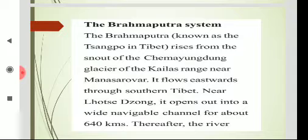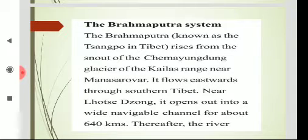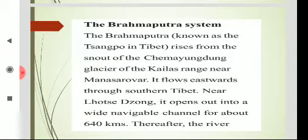The Brahmaputra, known as Tsangpo in Tibet, rises from the snout of Shemayangdang glacier of the Kailash range near Mansarovar. Many of the Himalayan rivers originate in glaciers — large accumulations of snow. Brahmaputra also originates from the Shemayangdang glacier. When it flows through Tibet, it is called Tsangpo. It then flows eastwards through southern Tibet, and near Lost Sejong it opens into a wide navigable channel for about 640 kilometres.